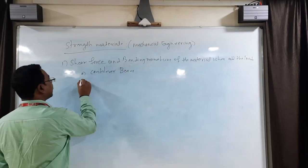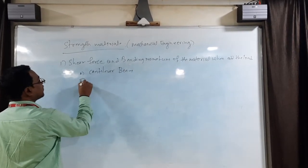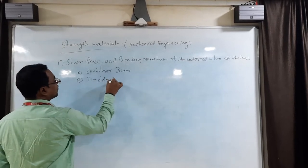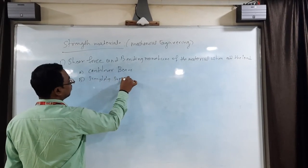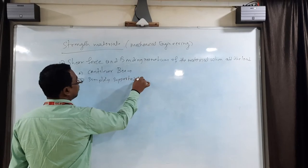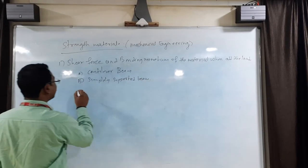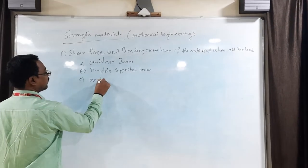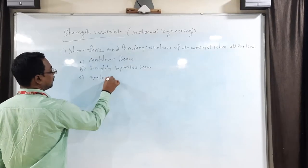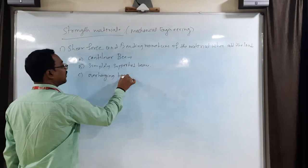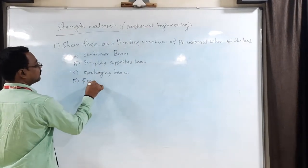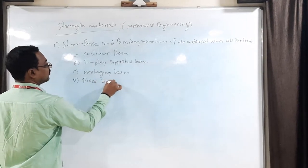First one is cantilever beam. Next one is simply supported beam. Third one is overhanging beam. And D is fixed beam.